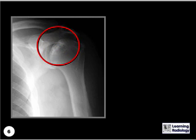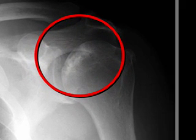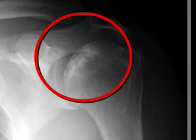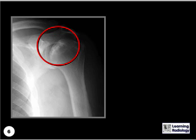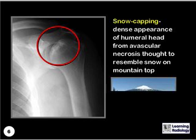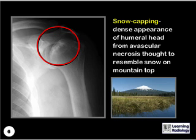What sign is demonstrated here? That is snow capping, which is the dense appearance of the humeral head from avascular necrosis, thought to resemble snow on a mountaintop. Possible causes include steroid administration or sickle cell disease.